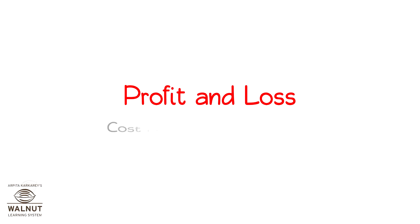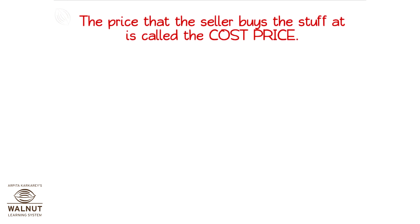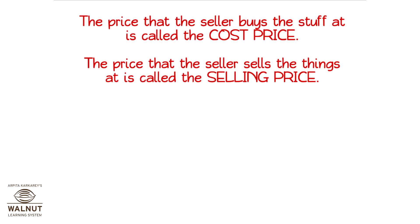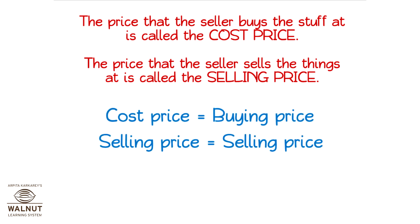Profit and Loss: Cost Price and Selling Price. The price that the seller buys the stuff at is called the cost price. The price that the seller sells the things at is called the selling price. Cost price is the buying price; selling price is the selling price.